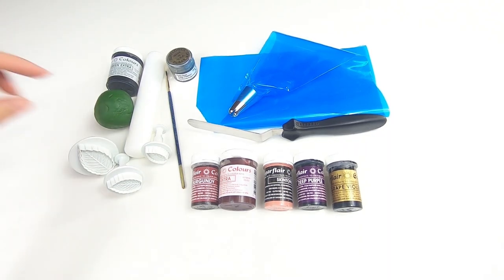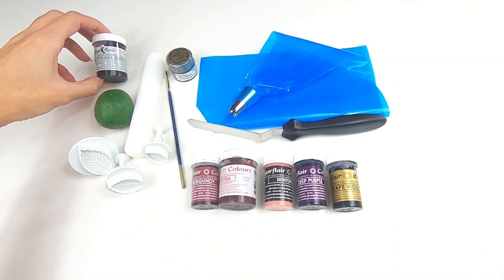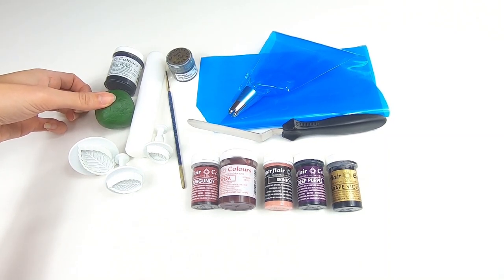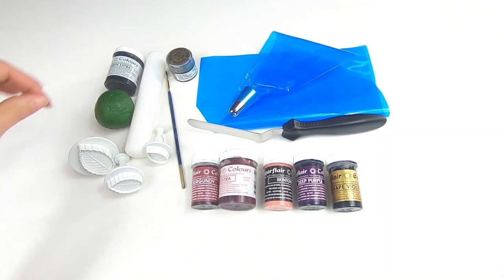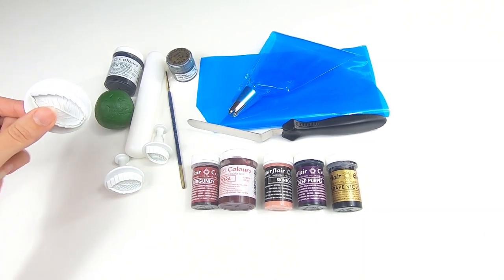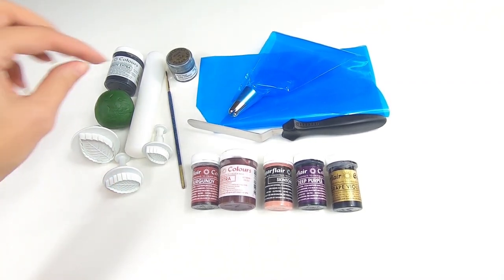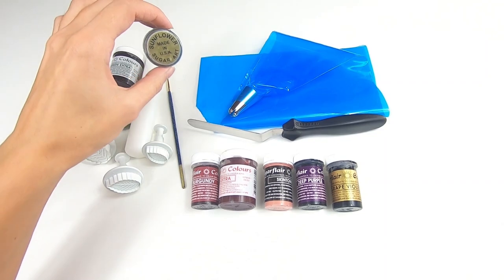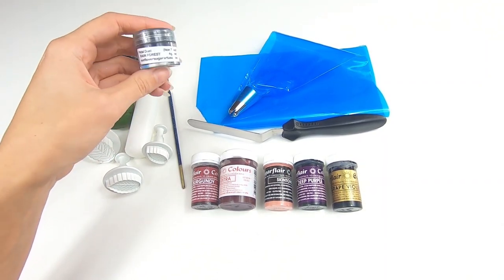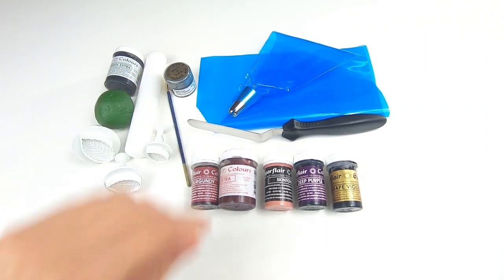We're going to be starting off with some modeling paste which I've colored green using Sugar Flair's Foliage Green Extra. The brand for the modeling paste I used was Saracino. You're going to need your rolling pin, your leaf cutters. These are from PMA and they usually come in three sizes and we're just going to be using the middle size today. And then your paintbrush and some edible dust. I'm using the brand Sugar Flower Sugar Art in the color Rainforest.